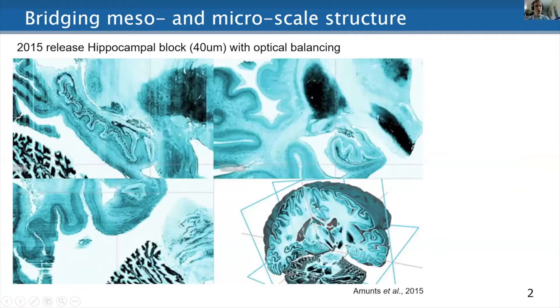So first of all, we worked with the 2015 hippocampal block, so that's 40 micron isotropic. I should say there's a caveat that some of the work was done at 80 microns just for computational reasons.